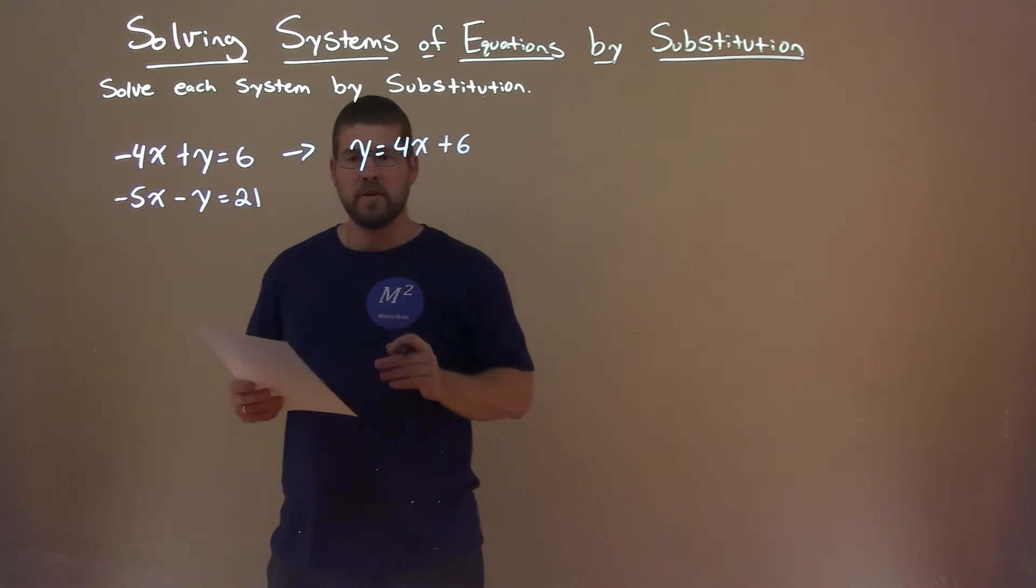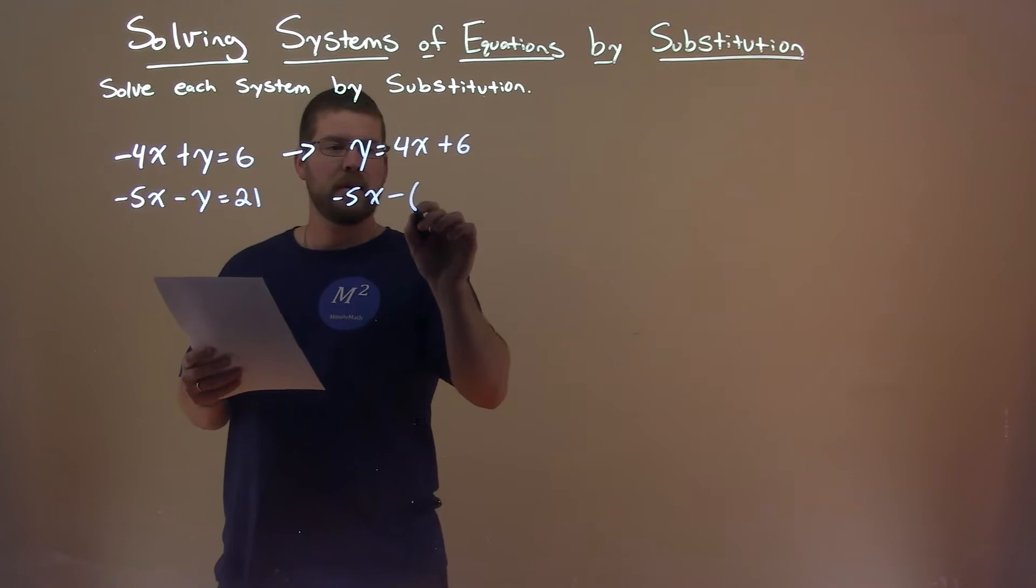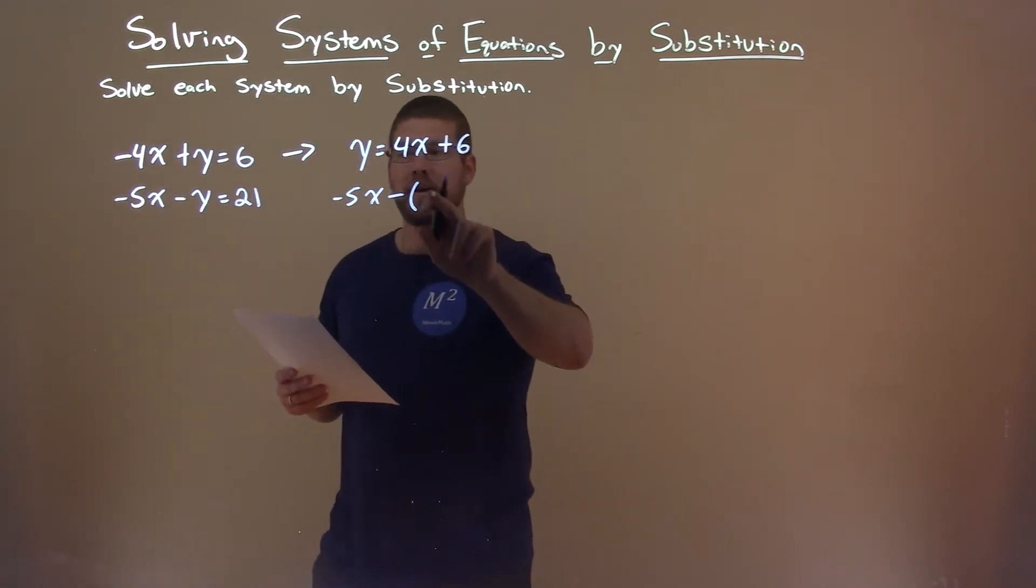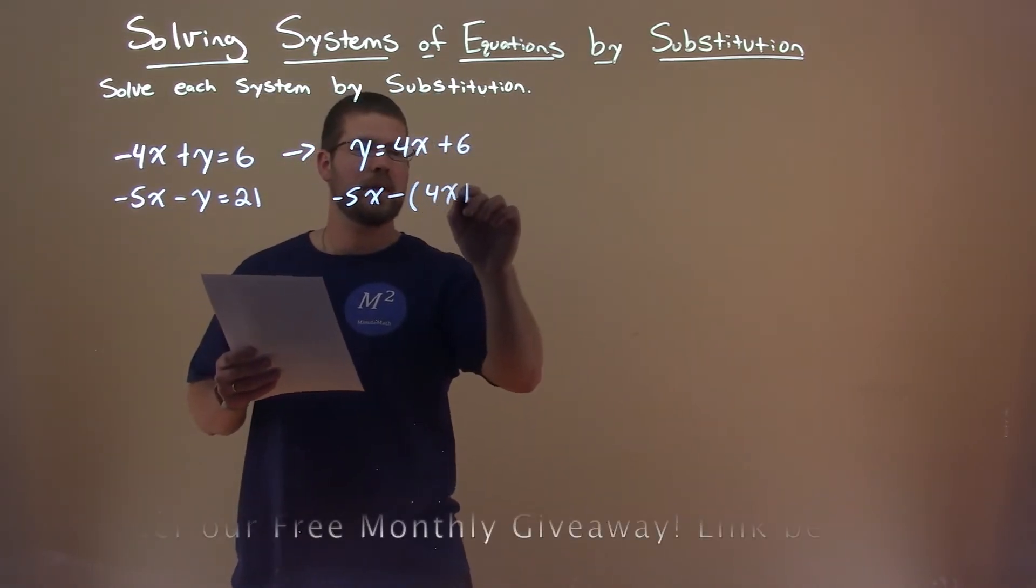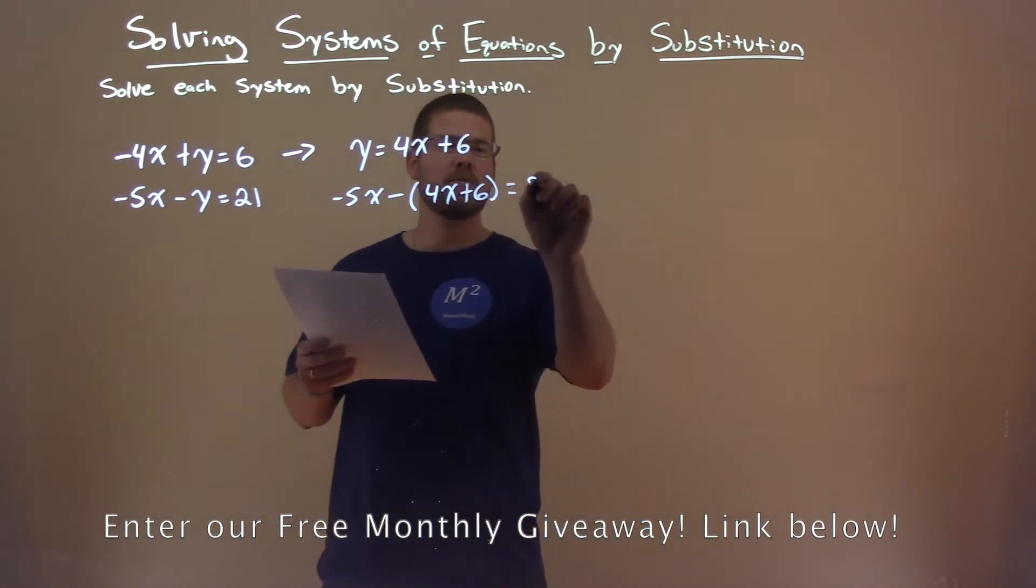With that information, I take the second equation, minus 5x minus, and I'm substituting this y in for the second equation, which is 4x plus 6, hence the term substitution, and that equals 21.